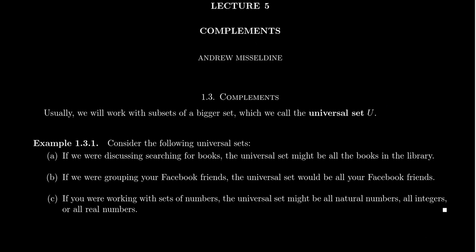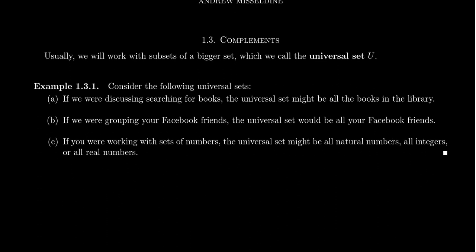As a reminder, when working with sets, it's sometimes necessary to discuss the idea of a universal set, which is often referred to as U. When one is discussing complements, it's almost a necessity. There's one important exception, which we'll see by the end of this video. The universal set is the set for which all the other sets live in, and this can change relative to the situation. If we're discussing searching for a book, it's probably implicit that your universal set is actually the collection of books in some type of library.